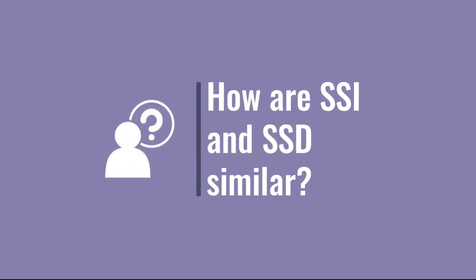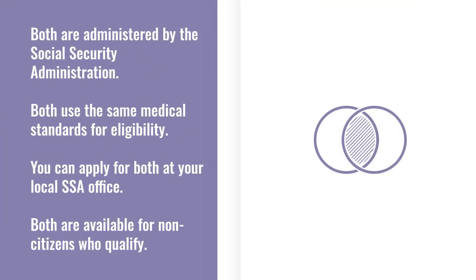What are the similarities between SSI and SSD? Both SSI and SSD are administered by the Social Security Administration, or the SSA. Both programs use the same medical standards to determine whether you qualify for benefits. You can also apply for both SSI and SSD at your local Social Security office. Finally, both SSI and SSD are available for non-citizens who qualify. We'll talk more about that later in this video.